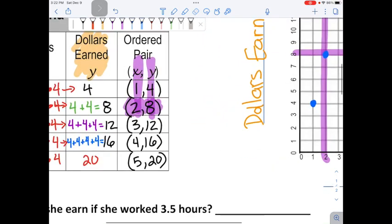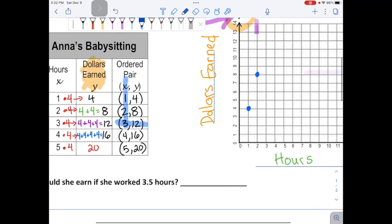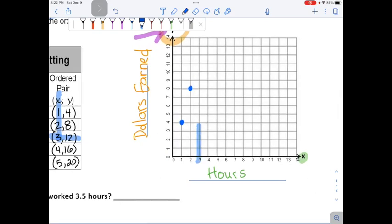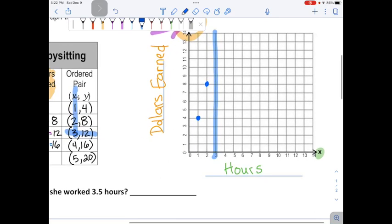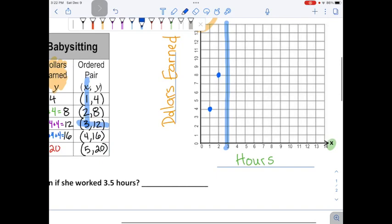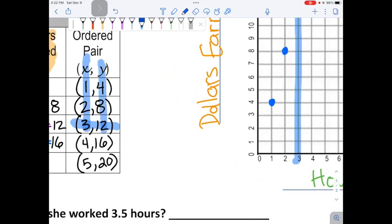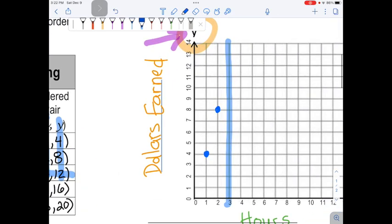Next one is three comma 12. So let's grab blue for that one. Three comma 12. Three is the x. That's the across line, that's the hours. Three. And then the y, zoom in. The y over here was 12. So we'll go on the up and down axis, get to 12. And where those connect, we'll put another dot.